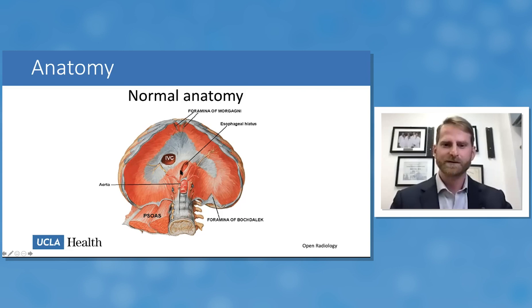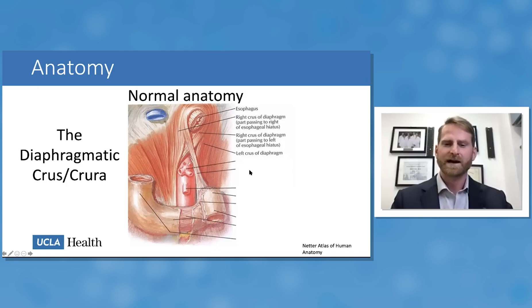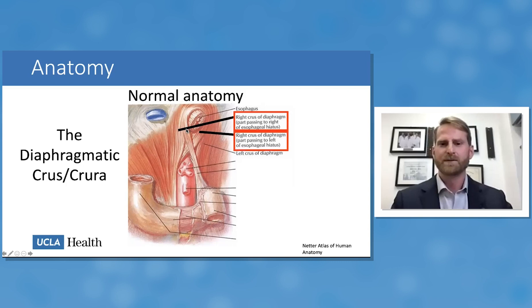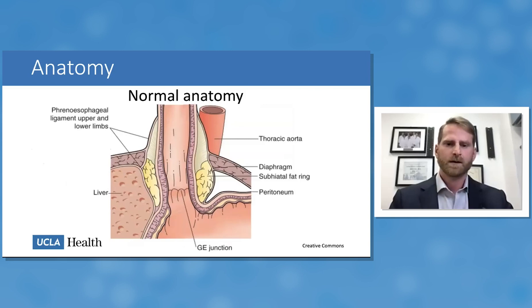As surgeons, we commonly refer to the muscle on the patient's right of the esophageal hiatus as the right crus and the muscle on the left as the left crus. For any anatomists, these are actually portions of the same crus — the muscle on either side inserts on the right side of the diaphragm — but for surgical purposes we refer to them as left and right crus.